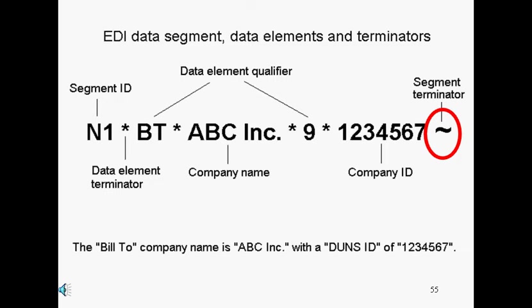Some data elements are qualifiers — they hold codes that describe the values of data elements after them. In this example, we have BT that tells us that the following element is a Bill-To company. The 9 tells us that the company ID is using the DUNS identification code. If we were to view a segment as a sentence, then the N1 segment would say: the Bill-To company name is ABC Inc., with a DUNS ID of 1234567.